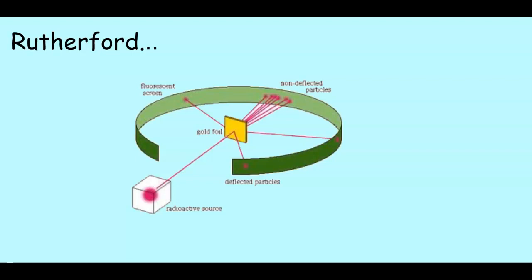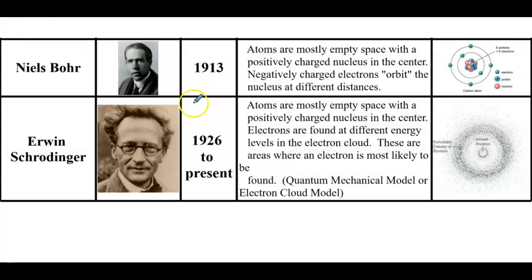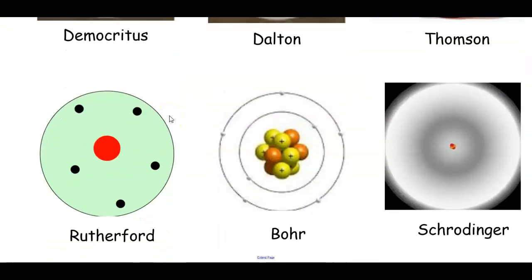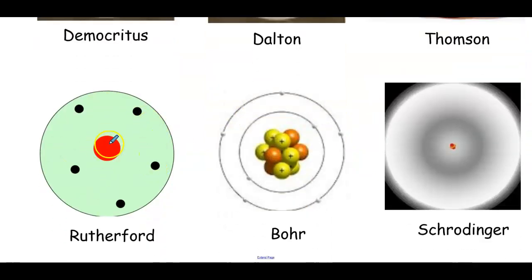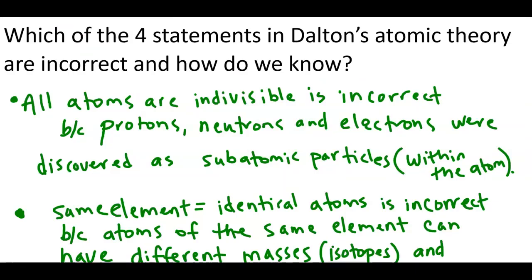Here's a picture of his gold foil experiment. These two guys just focused on where the electrons are and how they are moving, but we're going to have a whole unit on them next unit, so don't worry about them right now. Here's a summation of all the different models: starting with a hard sphere, then plum pudding, followed by Rutherford finding the nucleus, followed by electrons moving like planets around the sun, followed by electrons actually scattered throughout in probable locations. You should know which of the four statements of Dalton's atomic theory are incorrect and how we know — we discussed that already.